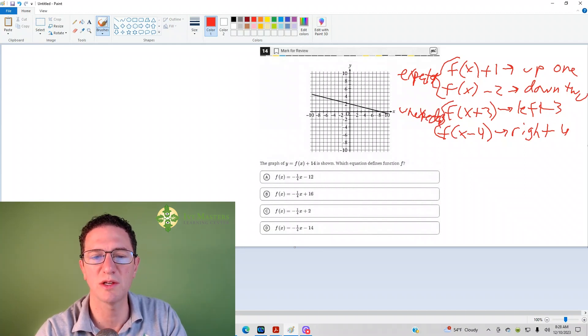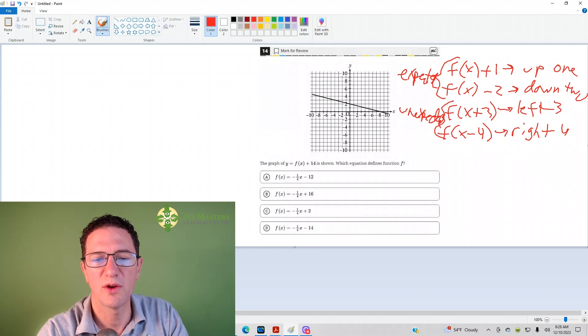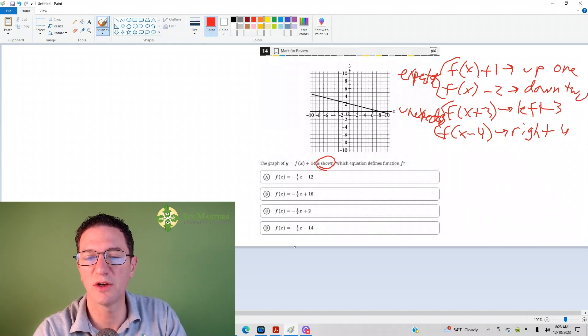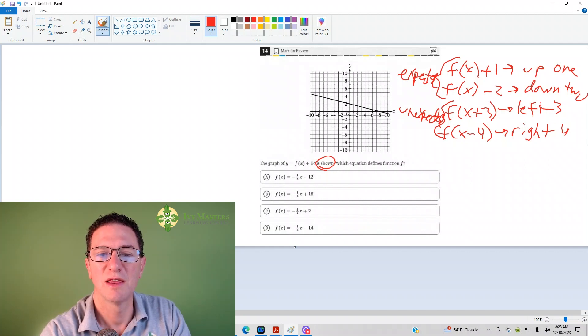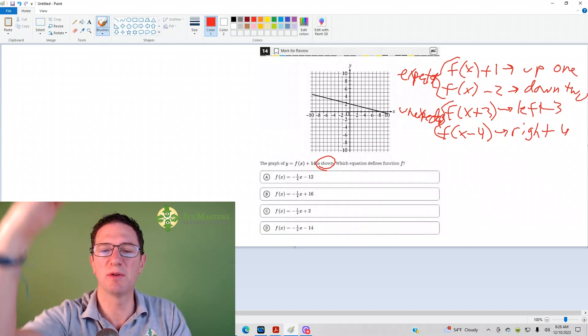Okay, now, when we read this question, the graph y equals f of x plus 14 is shown. So this is plus 14, which goes into the function f. So this line right here is after it's been moved up 14.